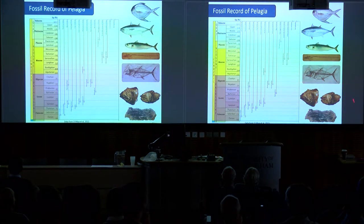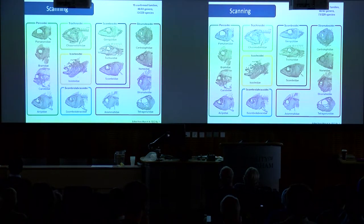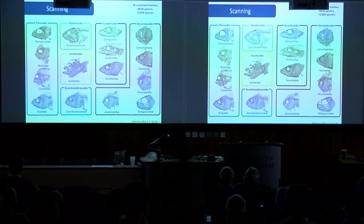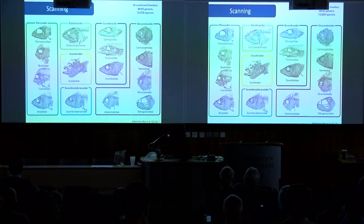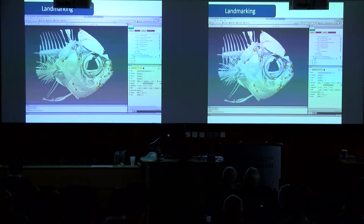This is where I'm leading to — using these fossils. I have been CT scanning extant fish, so living fish, to create a morphospace base to look at the fossils eventually. We've scanned all of the families — 73 of 230 species, just over a quarter. I have been landmarking all of these specimens: I've got CT scans of them, I've put landmarks on them, and then I've put these into the morphospace.